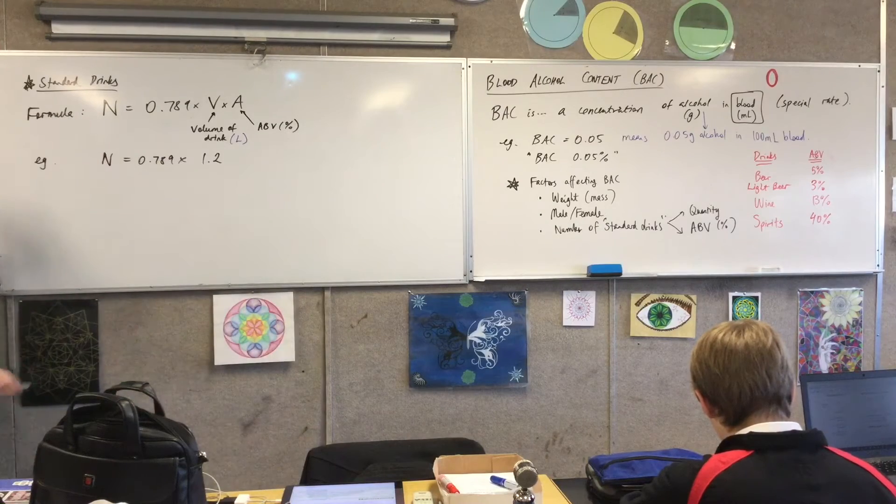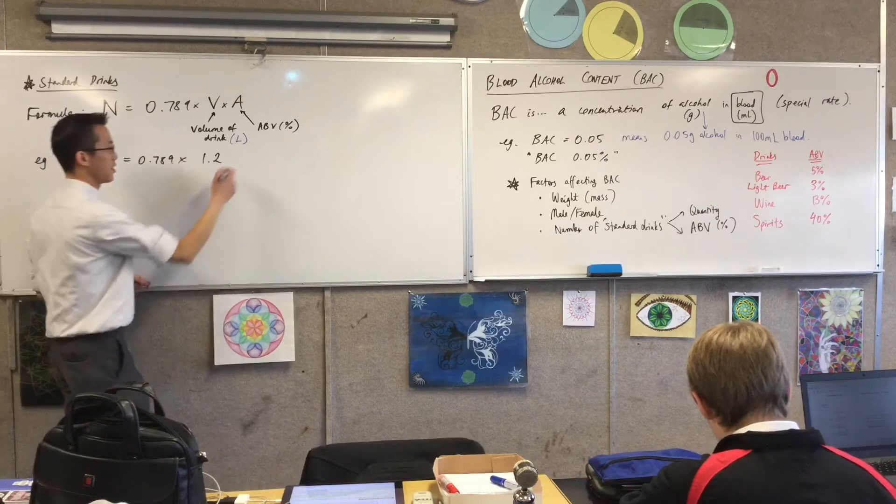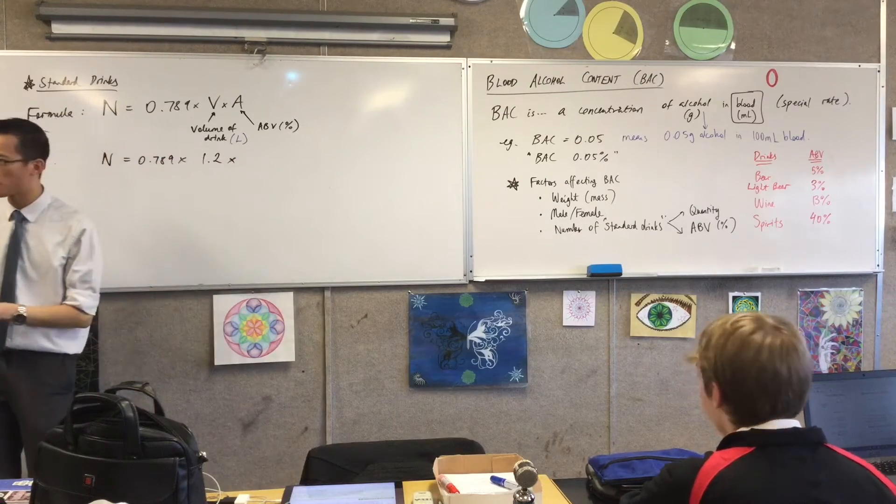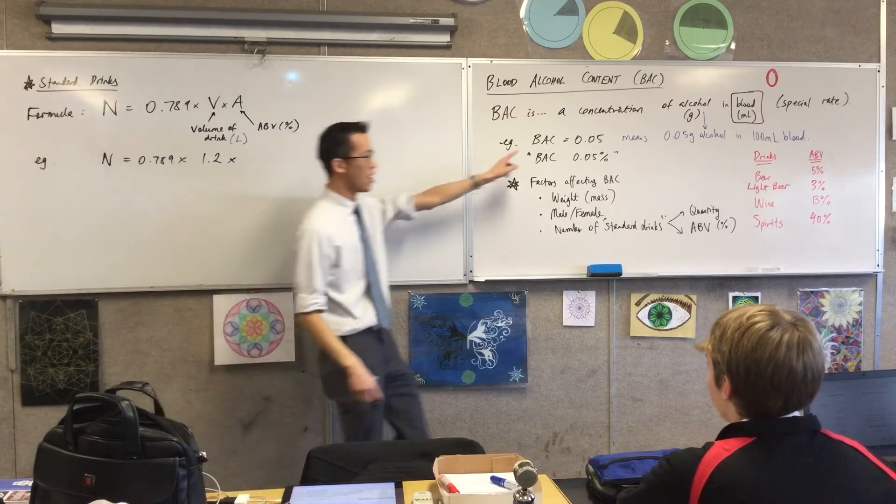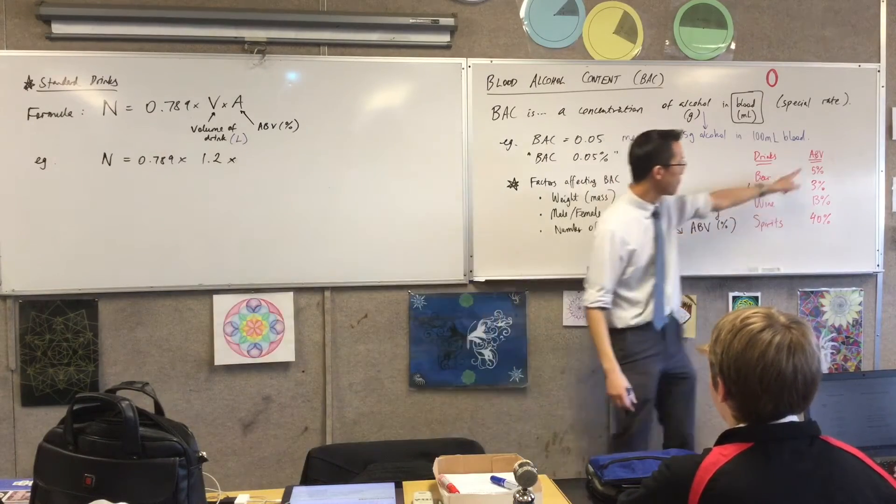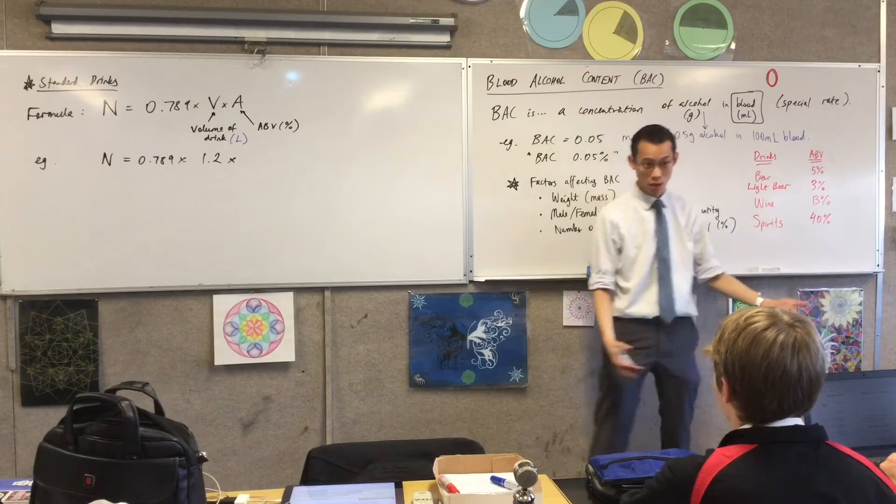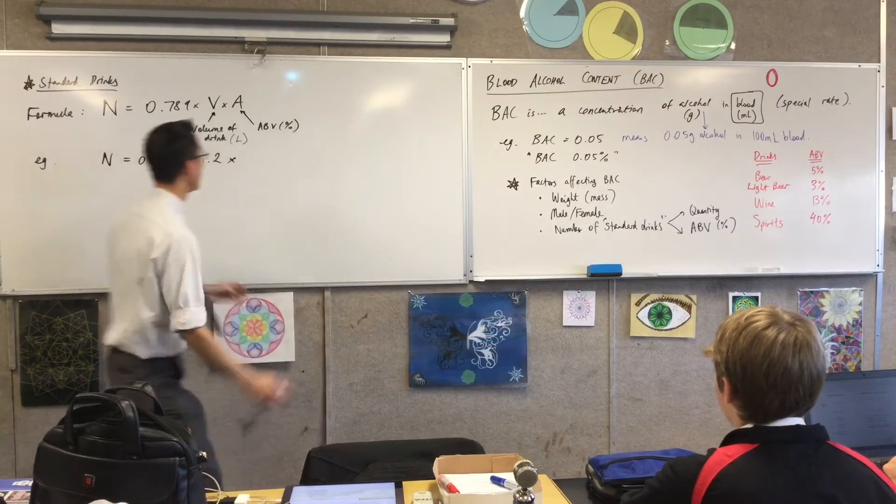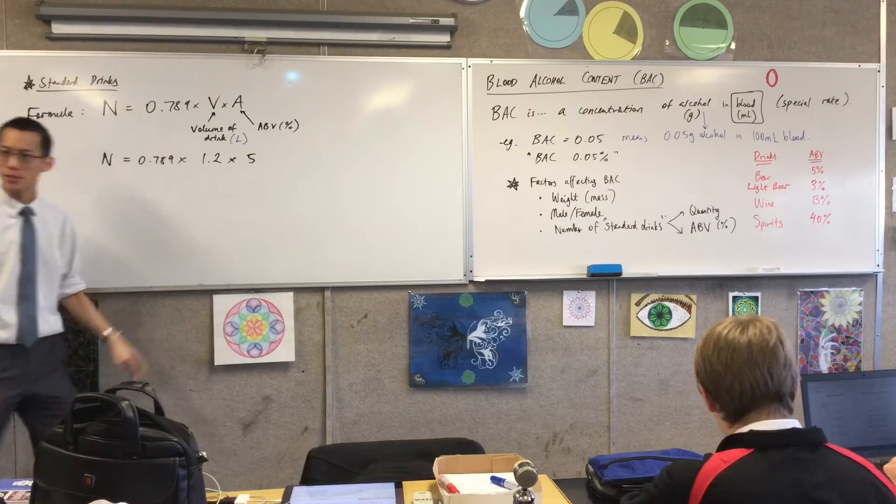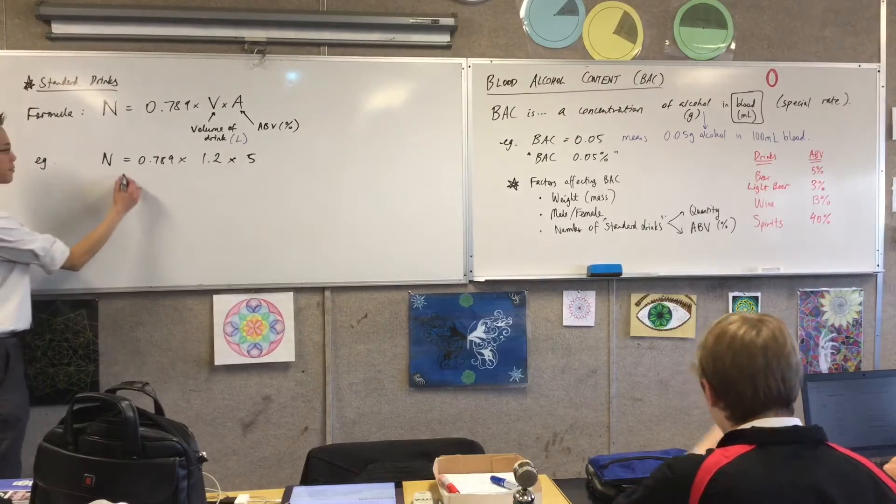And this percentage over here, this percentage, is not to be confused with blood alcohol content which is always this like 0.0 whatever, okay? It's a number like this: 5 or 3 or 13. It's a whole number and the percentage is included, okay? So I think we said alcohol is about 5%, okay? Sorry, beer is about 5%, okay?